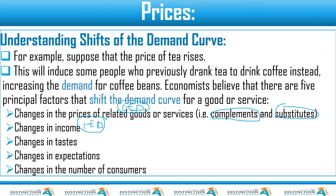The last factor is changes in the number of consumers. If there are more consumers for a certain good — for instance, right now surgical masks were mostly demanded by doctors, but now almost everyone demands them. So there's a change in the number of consumers, and that is definitely going to cause the demand curve for surgical masks to shift rightward.